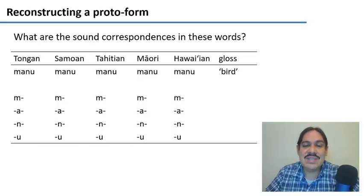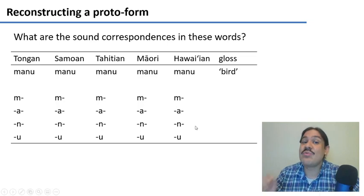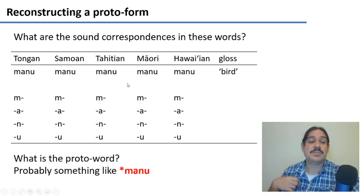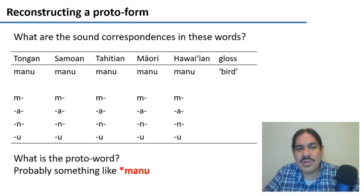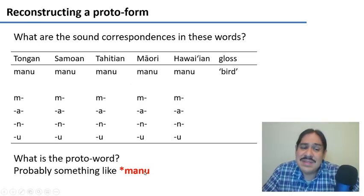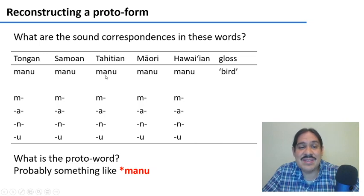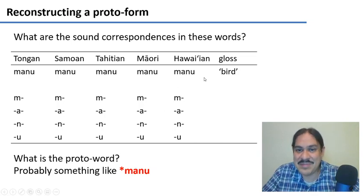So M is M for all the languages at the beginning of the word. A is A for all of them in the middle. N is N for all of them and U is U for all of them. Very straightforward. So all of these are the sound correspondences — and they are regular sound correspondences because we always see them. The proto-word would probably be something like Manu. And then we would say that proto-Polynesian M became M in Tongan, M in Samoan, M in Tahitian, M in Maori, and M in Hawaiian.